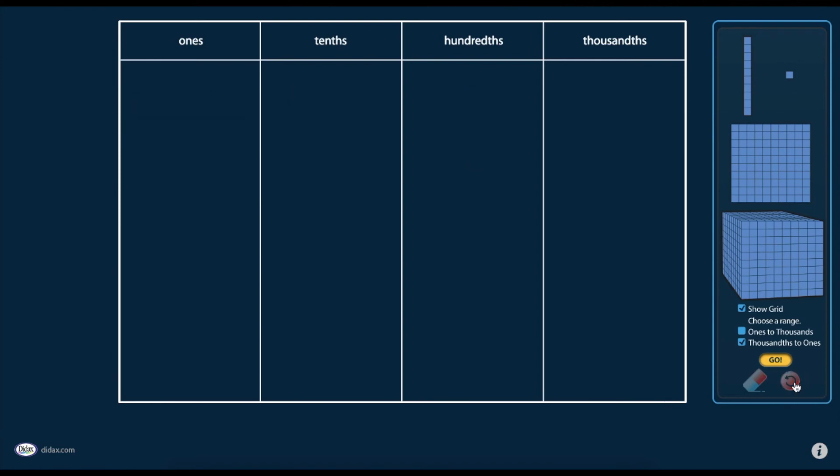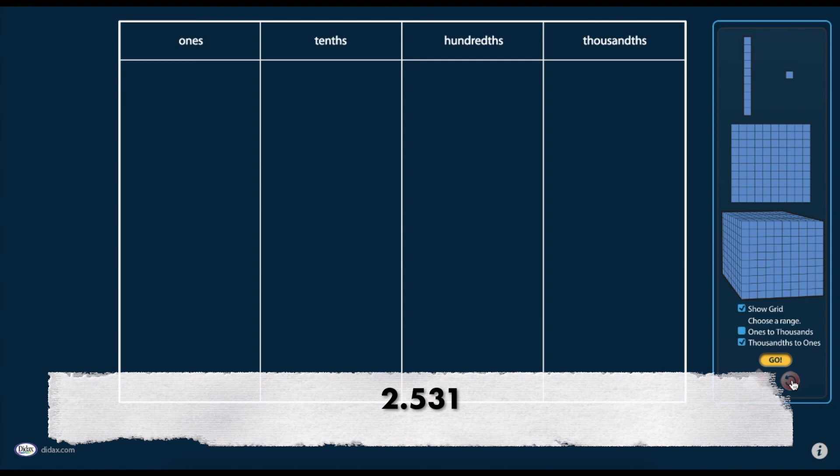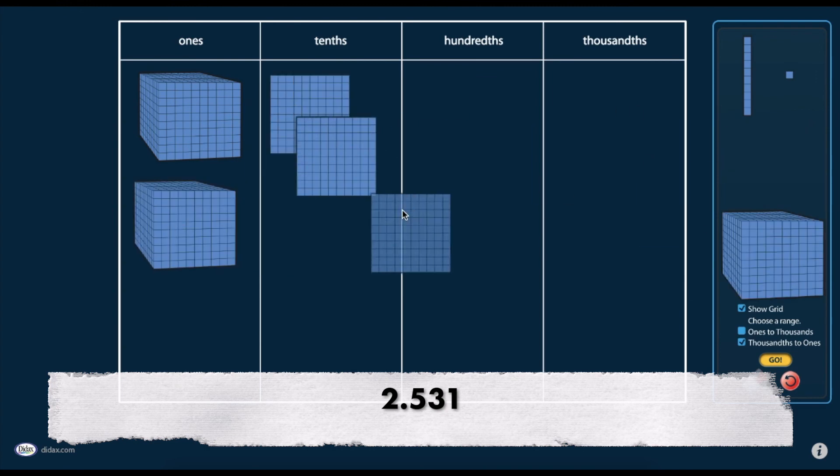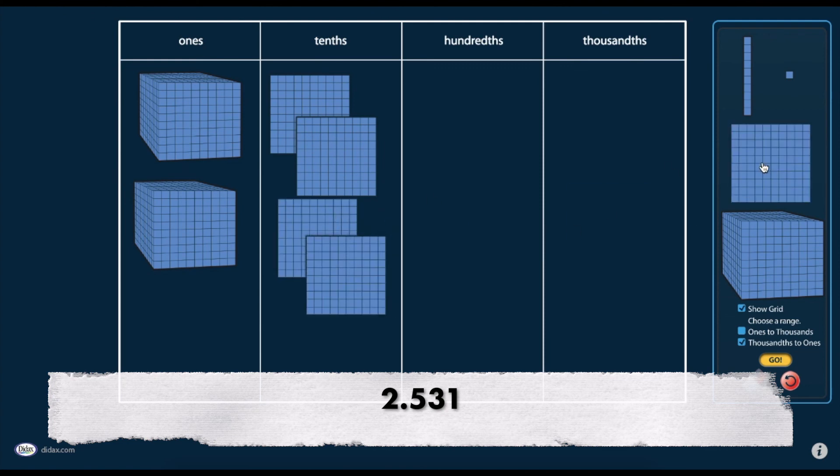First, let's clear off our mat. Let's create a model for this decimal number. We have two ones, five tenths, three hundredths, and one thousandth.